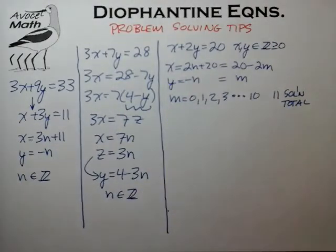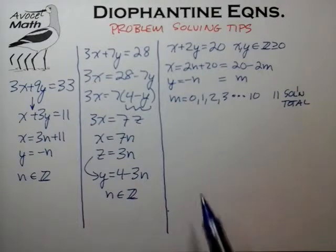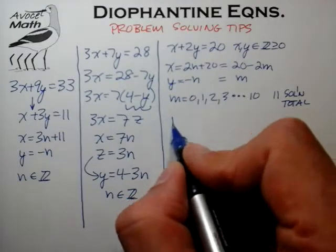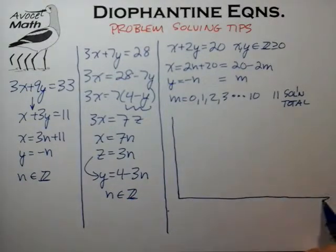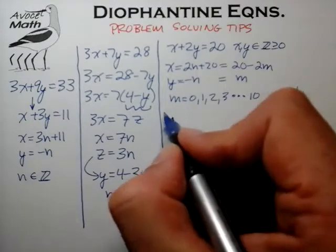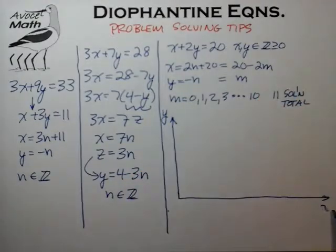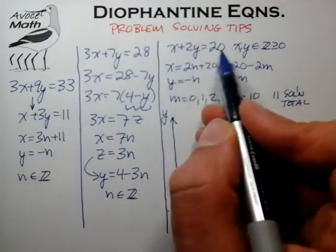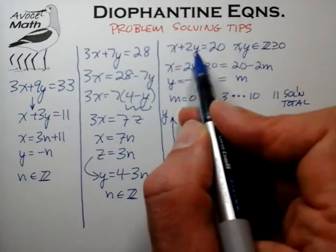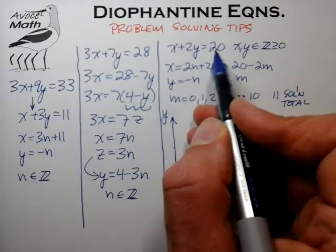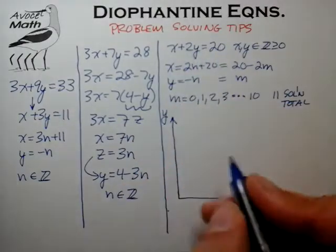It's sometimes very helpful to either solve or at least examine these equations graphically, as they can often give you insight you couldn't get otherwise. In this case, we're going to look at this equation graphically. What we realize is that this equation is a line that stretches from y equal to 10 to x equal to 20.